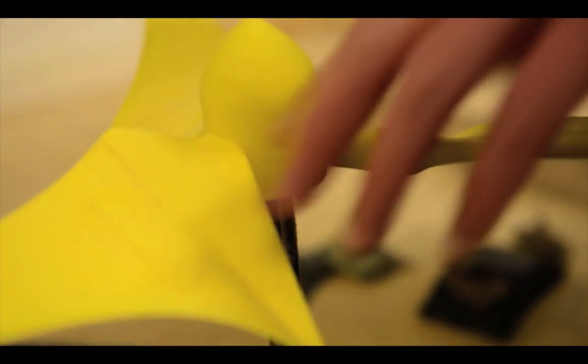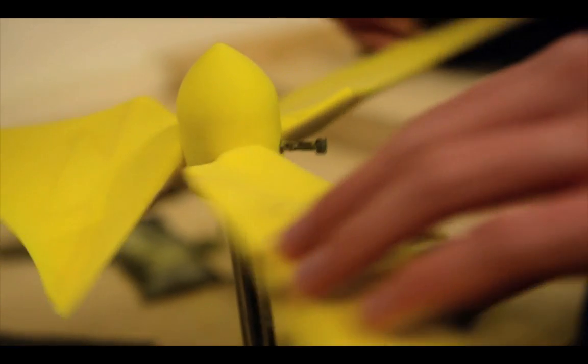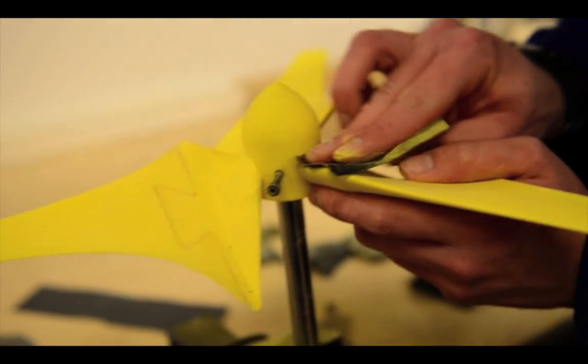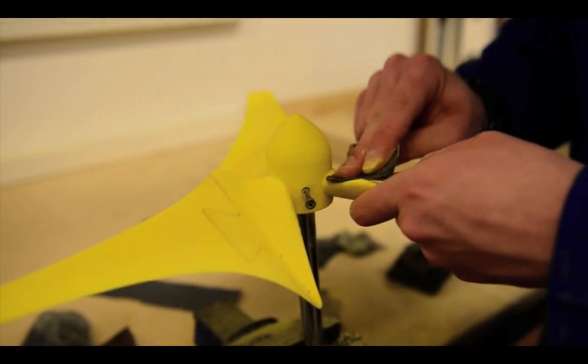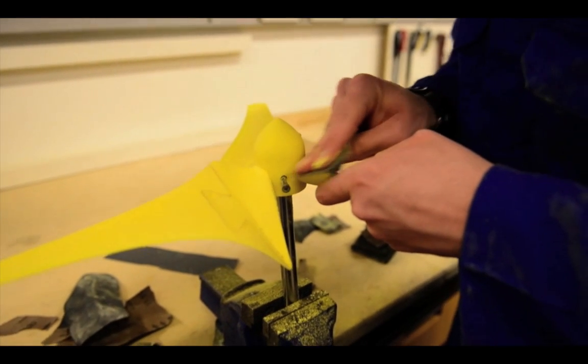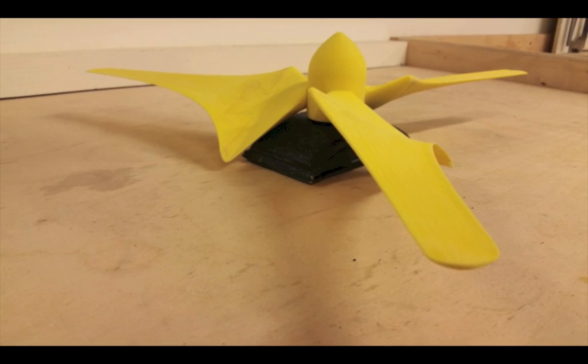When the glue has set, we proceeded on to sanding the assembly. Due to the nature of the rapid prototyping process, the initial surface finish was rough and we took some time sanding down to achieve a good surface finish.